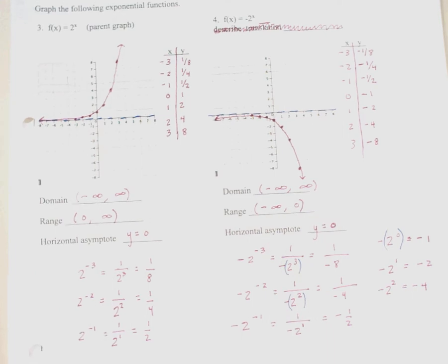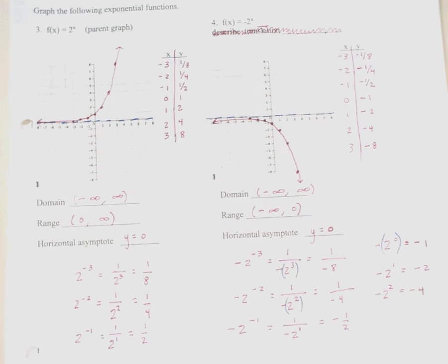The domain of all exponential functions is all real numbers, negative infinity to positive infinity. The range for this reflected function is negative infinity to 0, with parentheses around 0 because it is not included due to the horizontal asymptote.